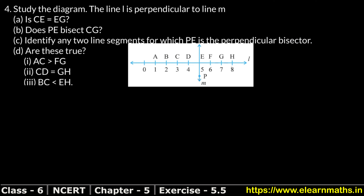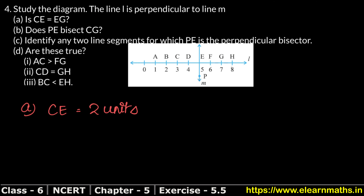Let's do question number four. The question says: study the diagram — line l is perpendicular to line m. In this diagram, line m and line l are shown. The question asks: is CE equal to EG? Let's look at the point C to E — CE is 2 units.